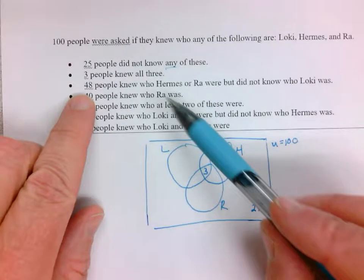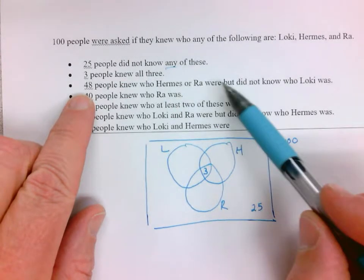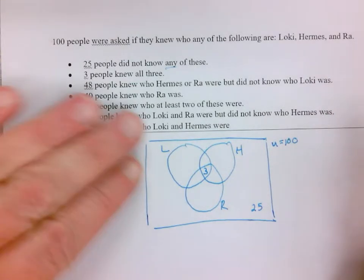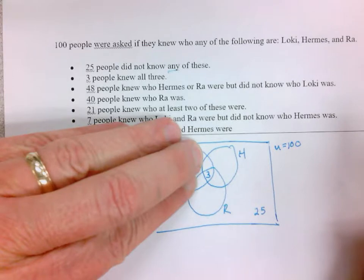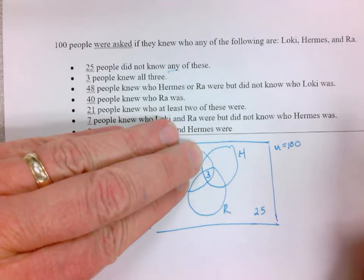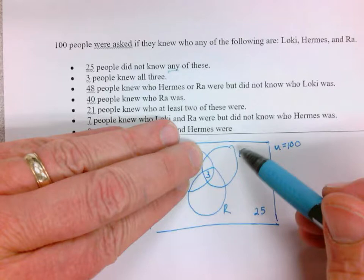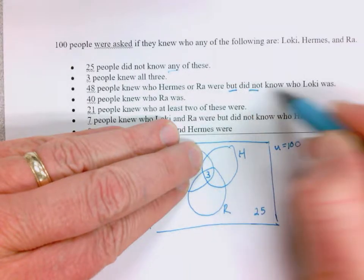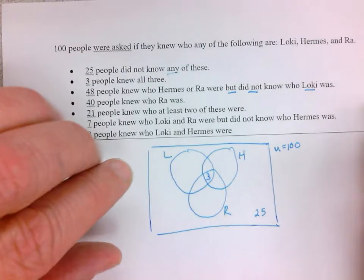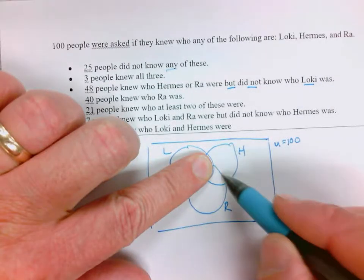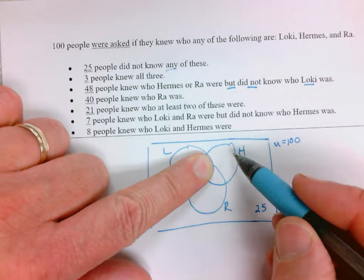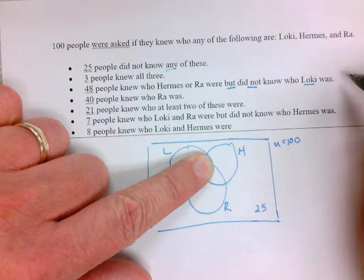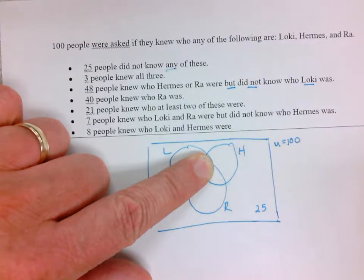48 people knew Hermes or Ra but did not know who Loki was. So Hermes or Ra would be all of that circle and all of that circle put together, but not Loki. So I'm going to cover up the Loki part and it's just going to be this part right here. So that number is 48. We can't use that to fill in a space right now, so we'll come back to this.